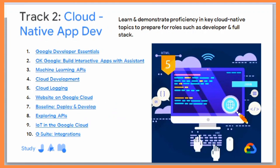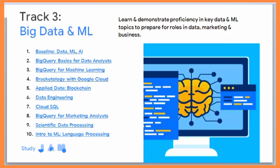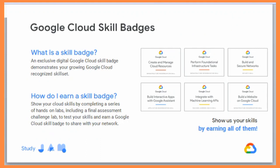Track 2 has a total of 10 quests and some skill badges — you need to complete all of them to earn the swags for Track 2. Track 3 is Big Data and Machine Learning, consisting of 10 quests and 4 badges. In this track, you learn and demonstrate proficiency in key data and ML topics to prepare for roles in data, marketing, and business. Completing all three tracks gives you additional benefits from the Google Cloud Readiness Program.